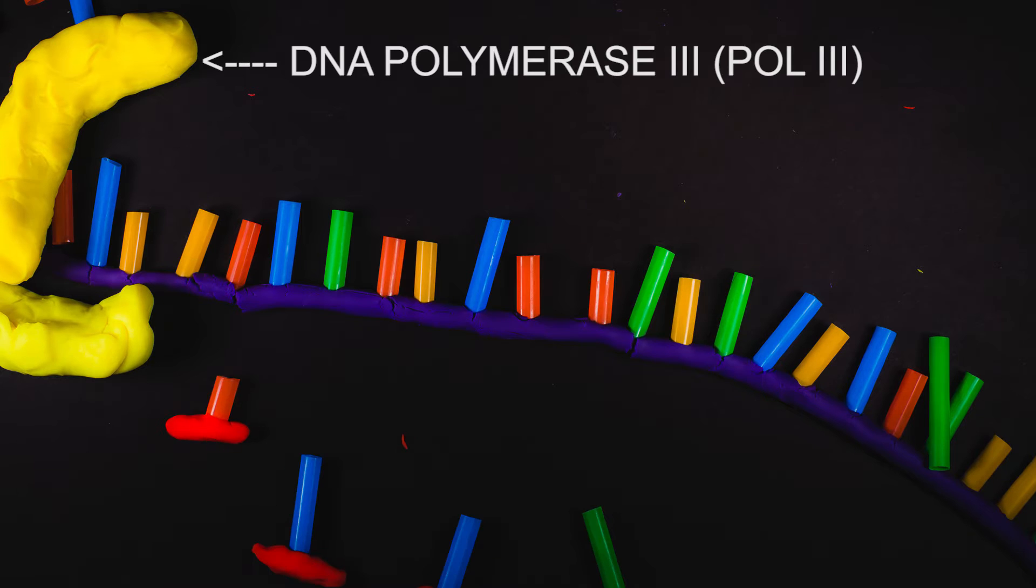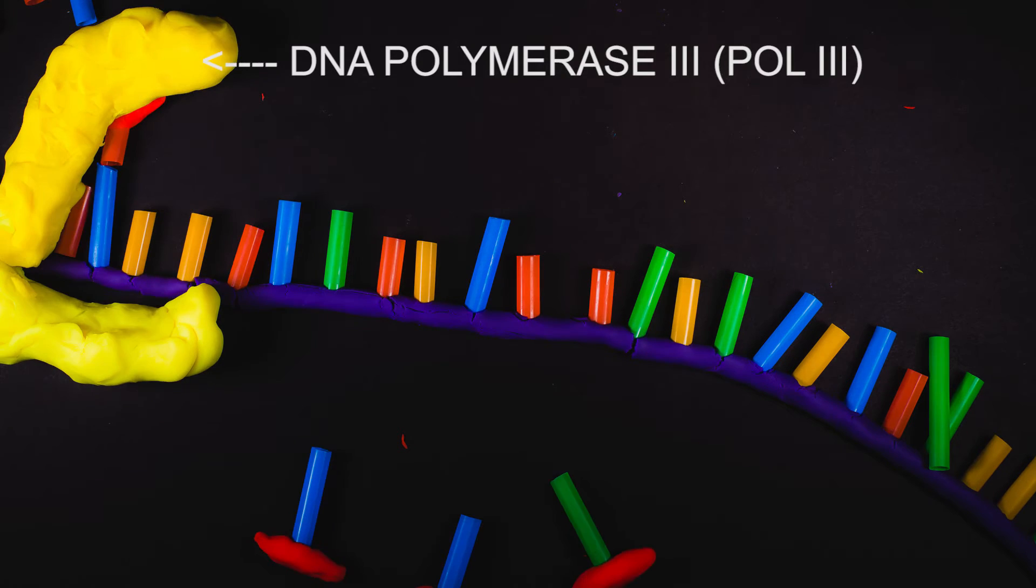First we'll look at the leading strand. E. coli has five different DNA polymerases. DNA polymerase 3, or POL3, is responsible for chromosome replication.